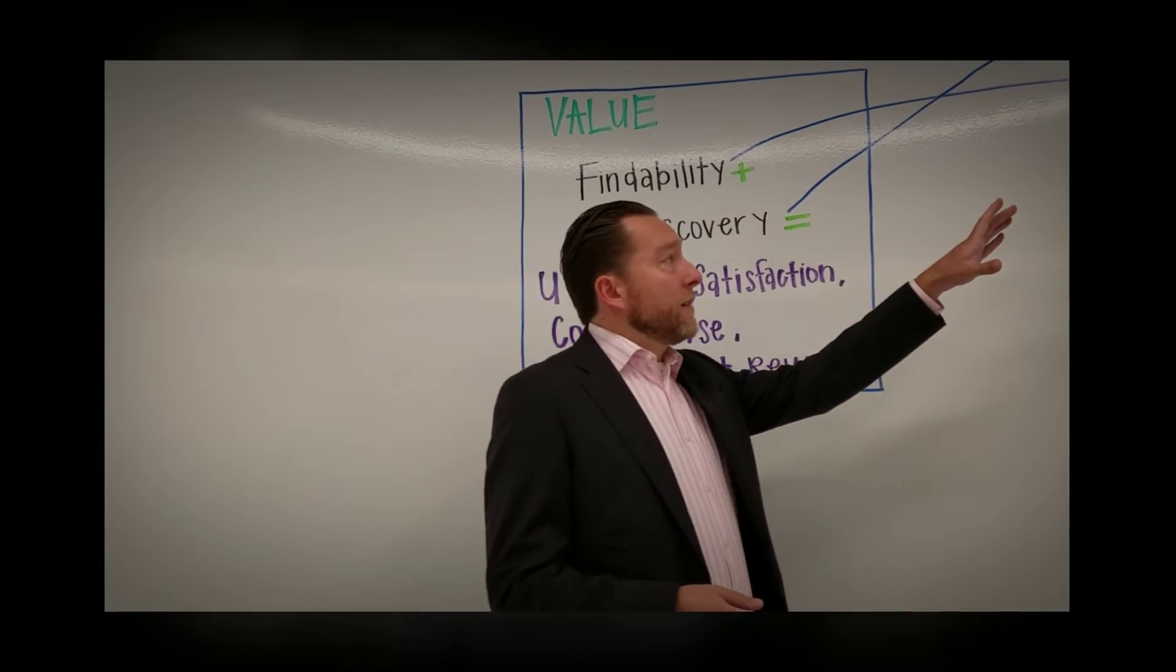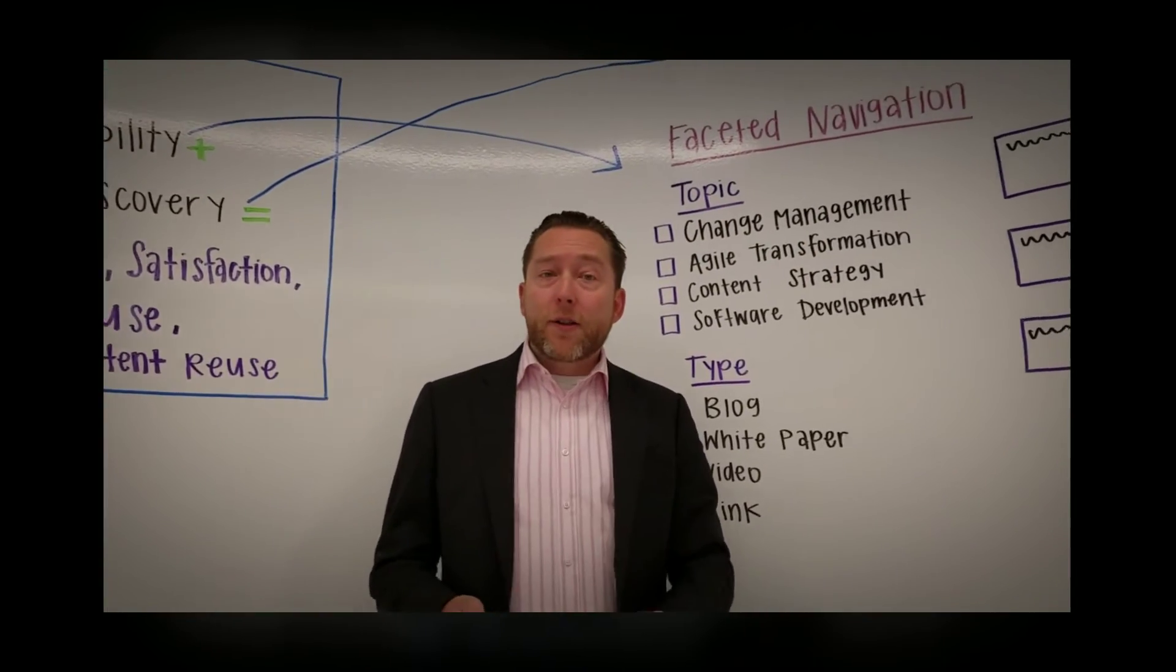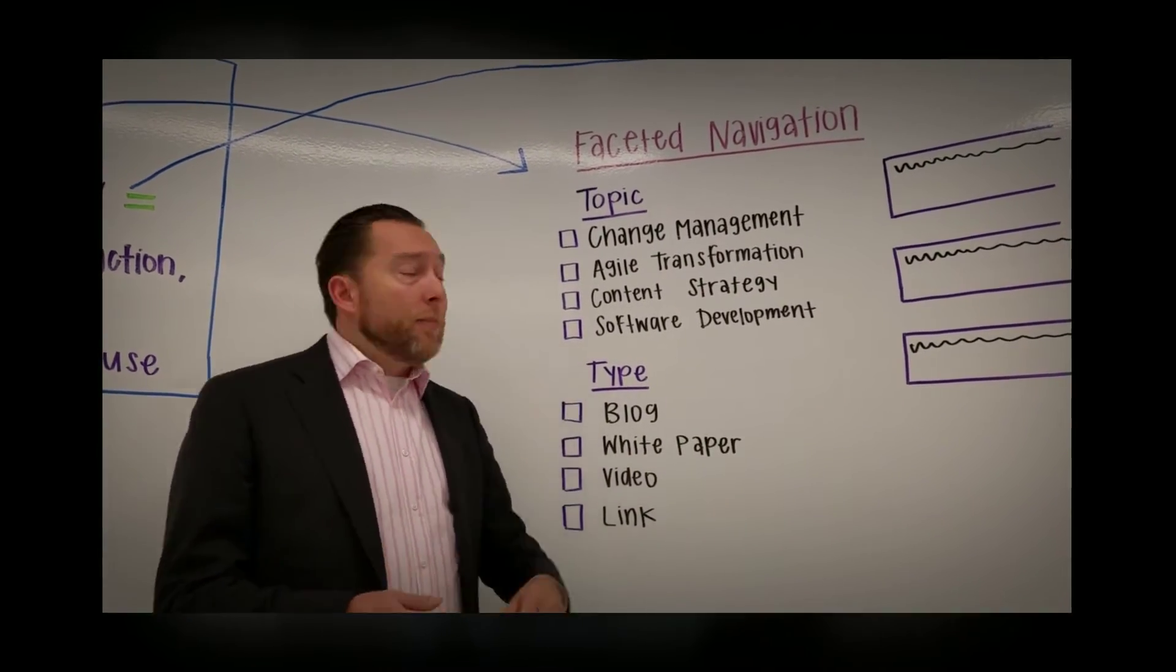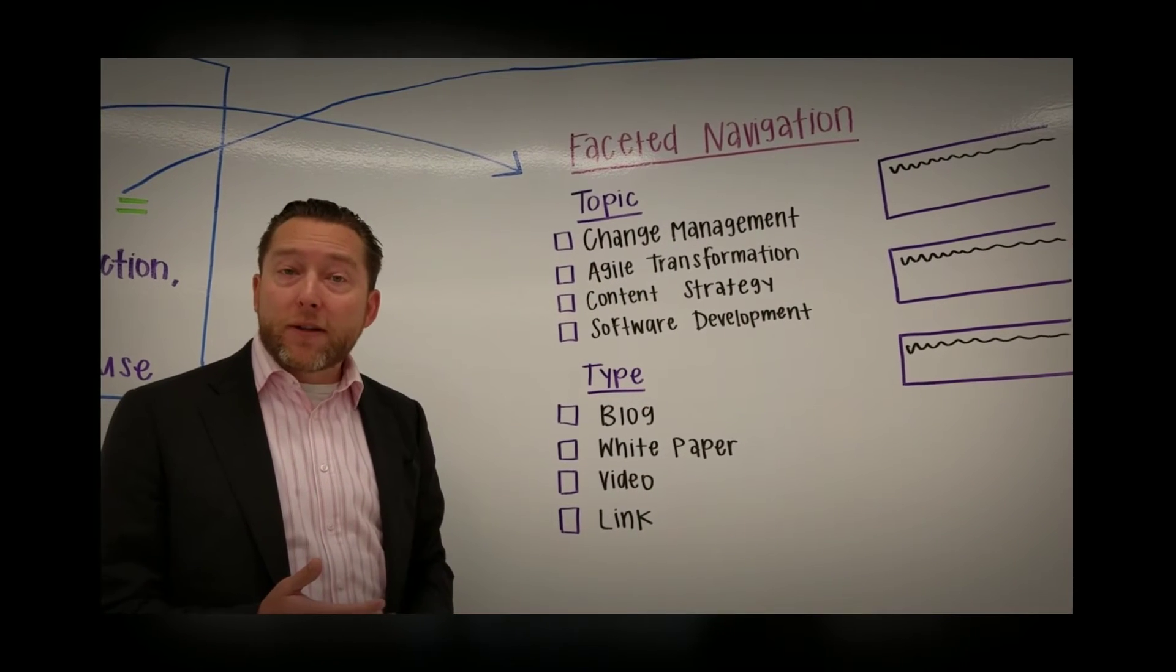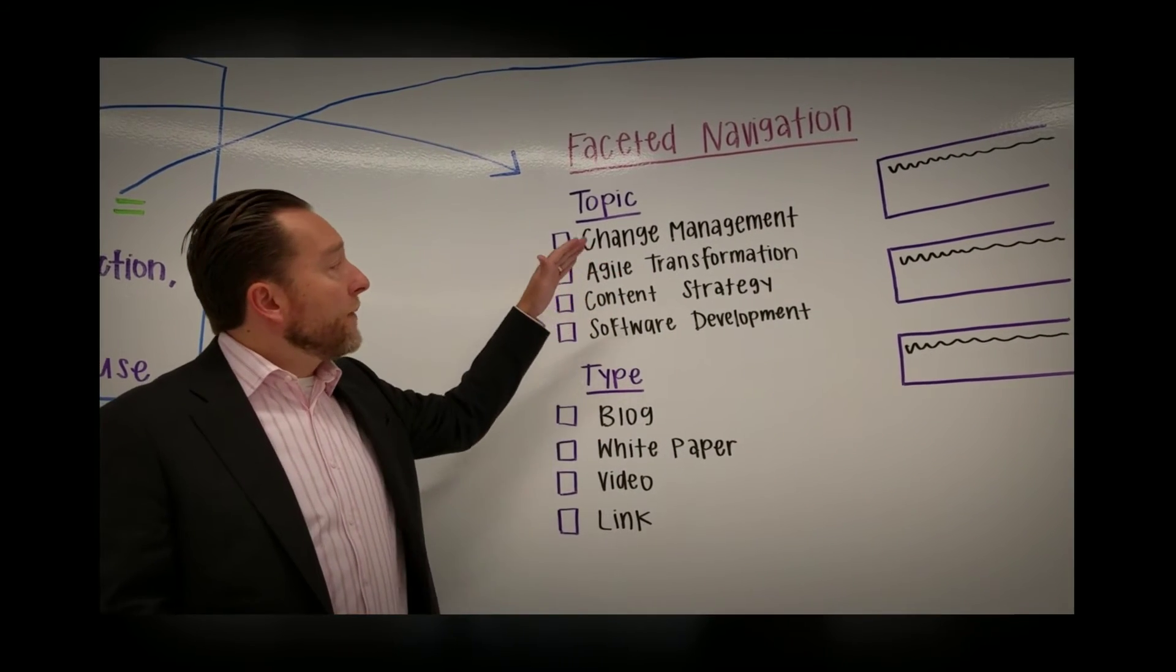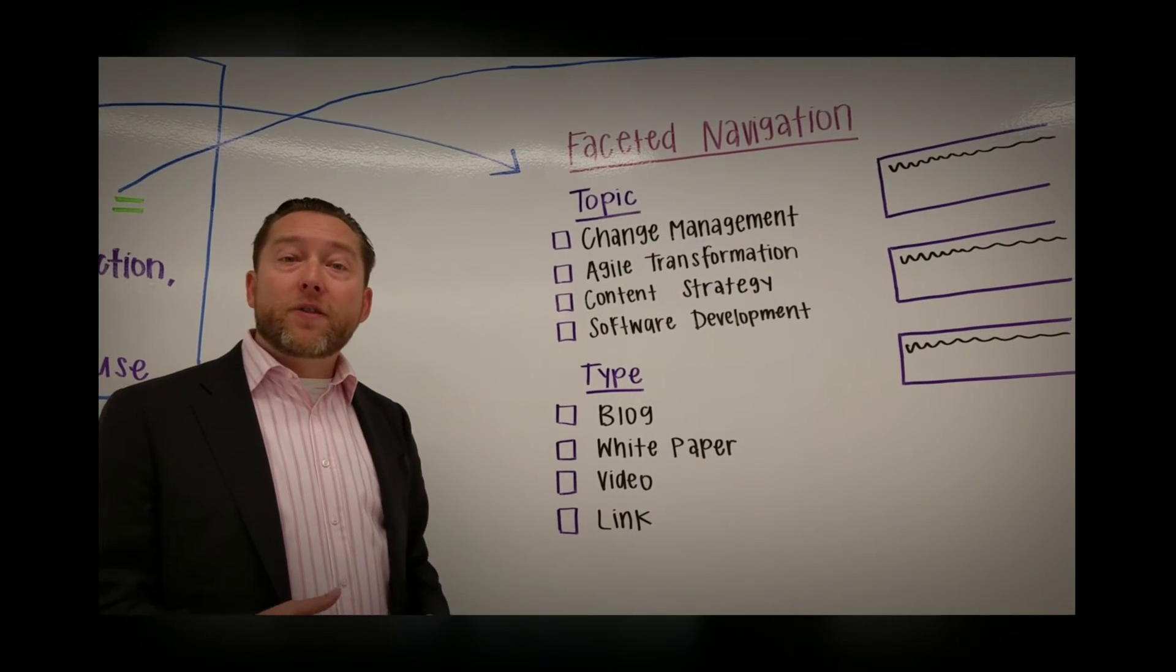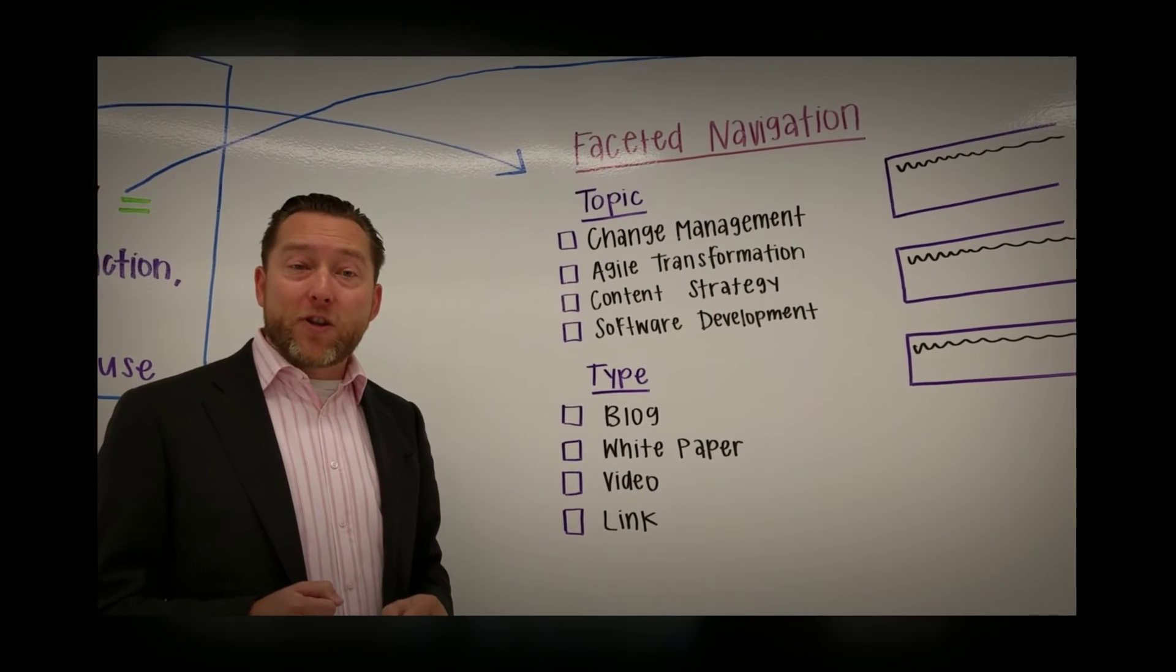One of the ways that it does this is through the concept of faceted navigation. Because we've consistently applied taxonomy to each piece of content, our users have the ability to choose from each of those fields and find just that information that matters to them.